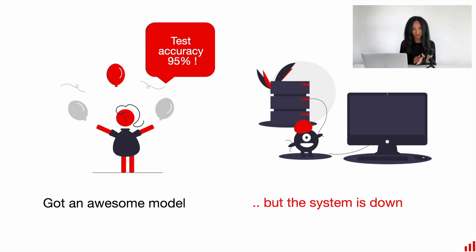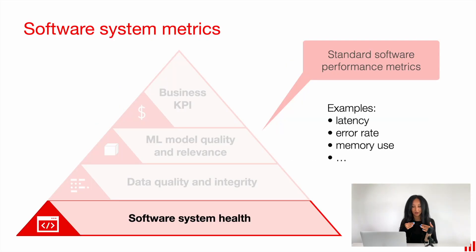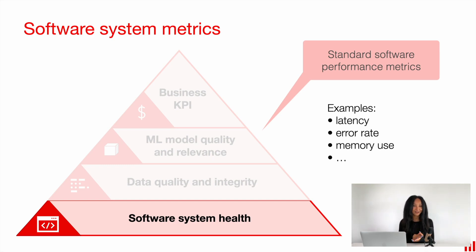Imagine you performed cross-validation correctly and even made some holdout dataset testing, so you are sure that your model is safe and sound. Unfortunately, if the system is down, no one can really benefit from the service. This is why it's essential to start from software system health. If you have production services in your company, you can reuse the existing monitoring scheme. Software system health monitoring includes standard performance metrics like latency, error rate, memory usage, disk usage, and many more.